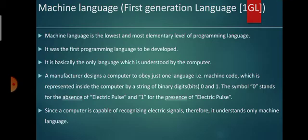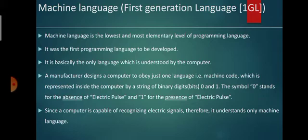Therefore, zero represents off and one represents on. Since the computer is capable of recognizing electric signals, it understands only machine language. It does not understand English language instructions. Therefore, for operating a computer, we should provide instructions in machine language.